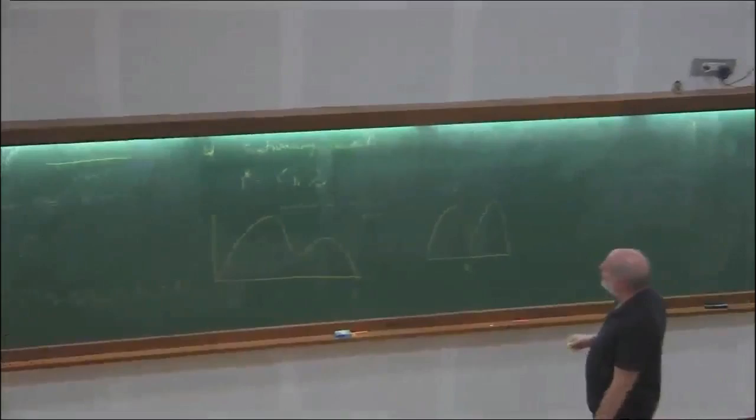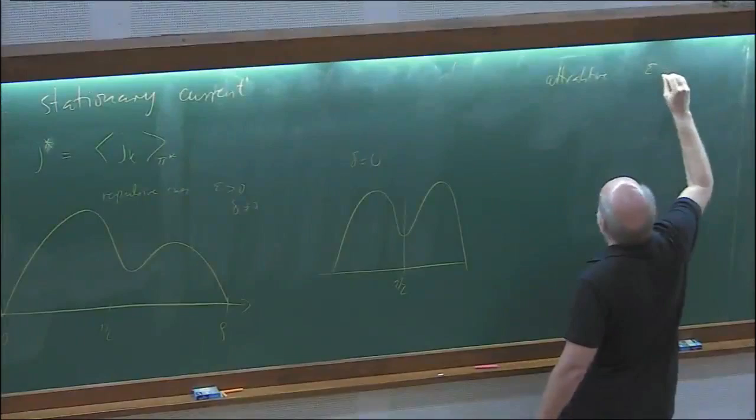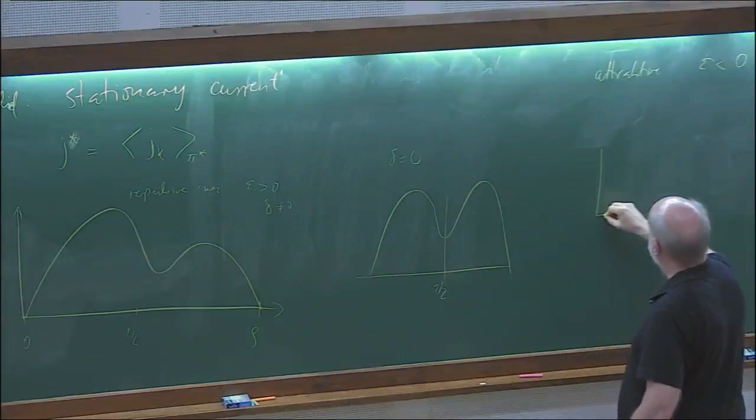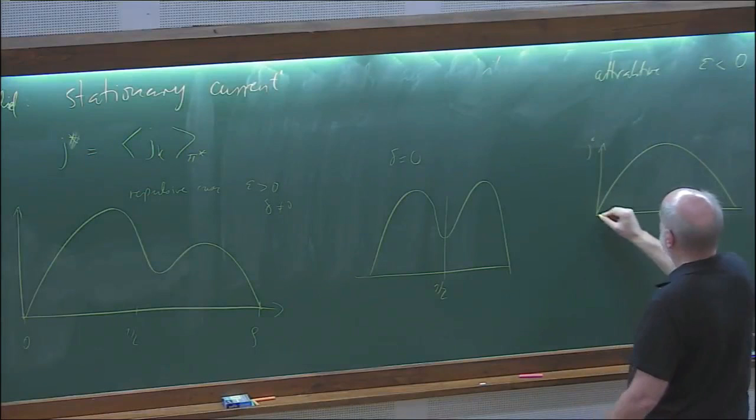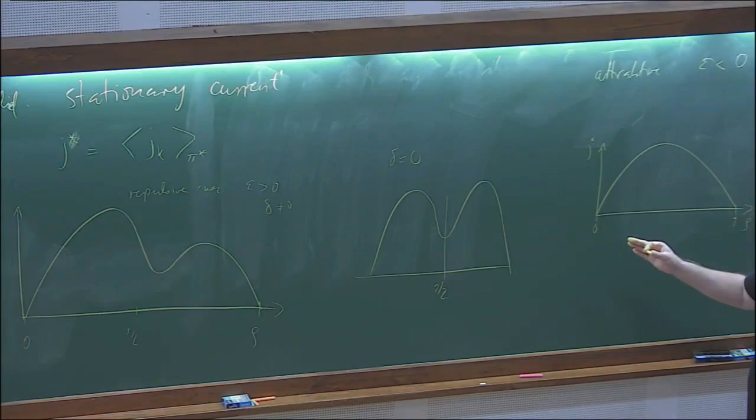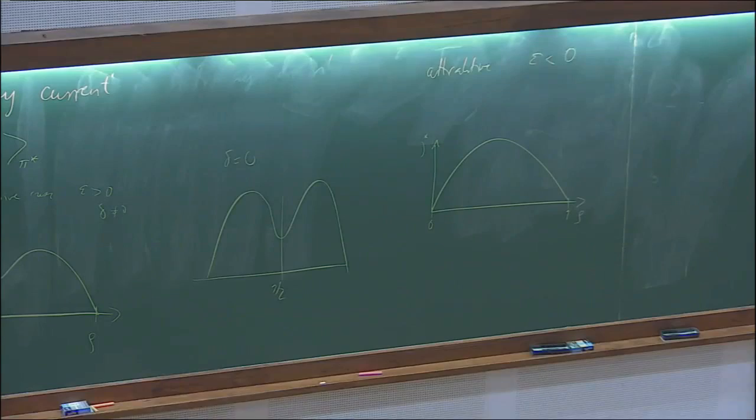Now let's specialize. Take epsilon = 0 first. As I mentioned, the stationary distribution is a product state irrespective of delta and irrespective of R and L. The current for epsilon = 0 is just a parabola. If additionally we take delta = 0 to make it symmetric, what remains is a very simple table of transitions.